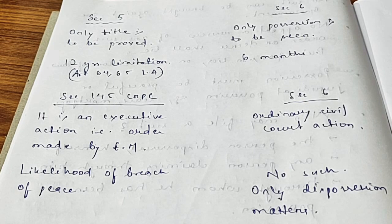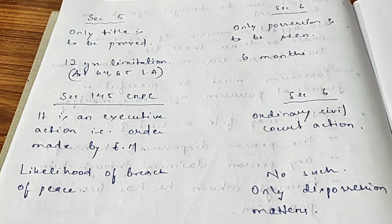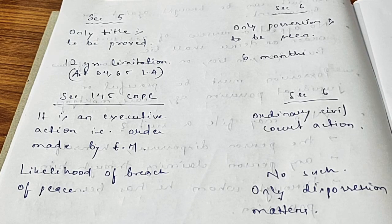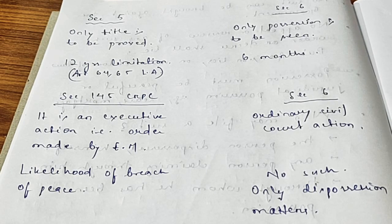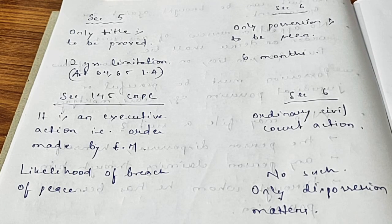There is also a difference between Section 145 CrPC and Section 6 of the Specific Relief Act. Under Section 145 CrPC, it is an executive action — an order made by the Executive Magistrate — whereas Section 6 is an ordinary civil court action. Additionally, under Section 145 CrPC, there must be a likelihood of breach of peace, whereas under Section 6 of the Specific Relief Act there is no such requirement. What matters is only the dispossession: whether the person who has brought the suit has been dispossessed otherwise than in due course of law.